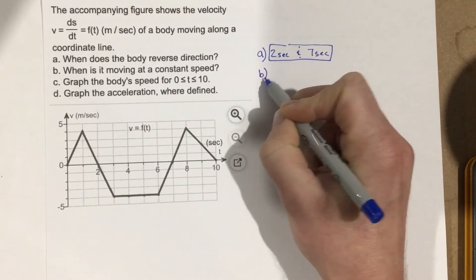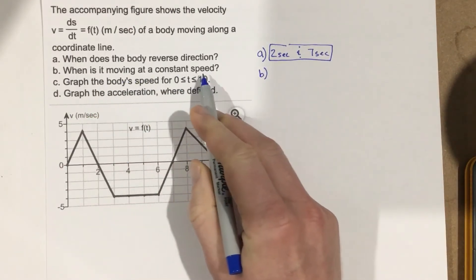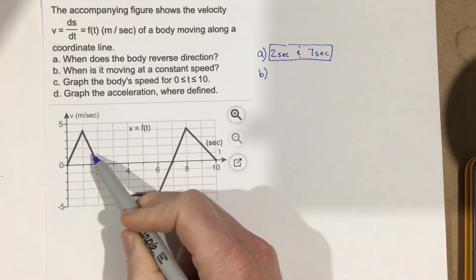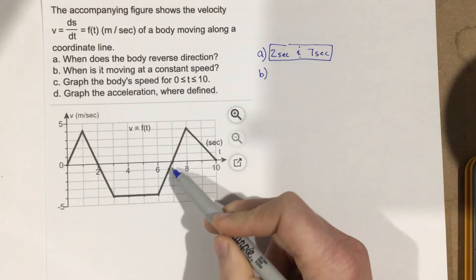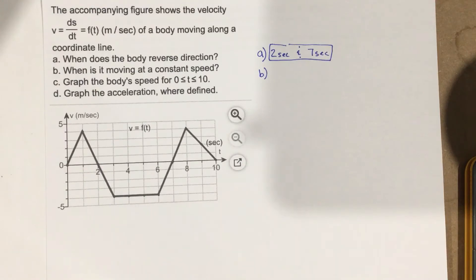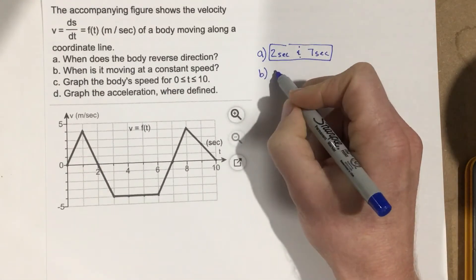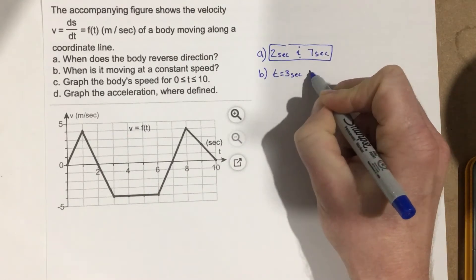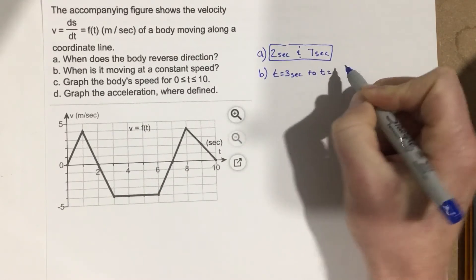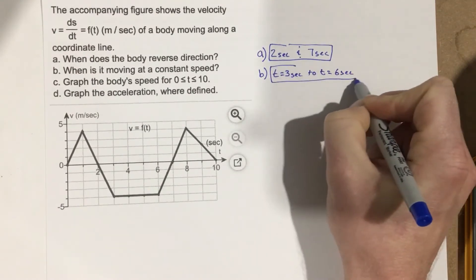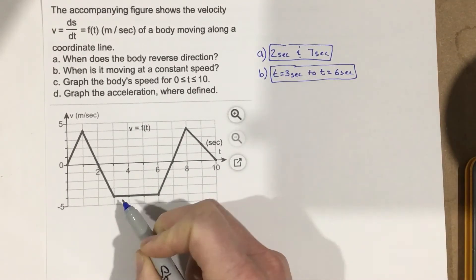Part b: when is it moving at a constant speed? Well, it's not moving constantly anywhere here where we have some slope, but we have a constant speed here, and that would be at time equals three to time equals six seconds. That's where it's got its constant speed.